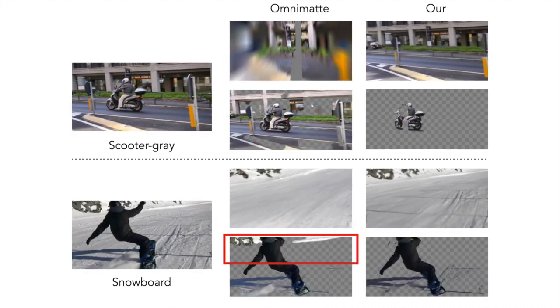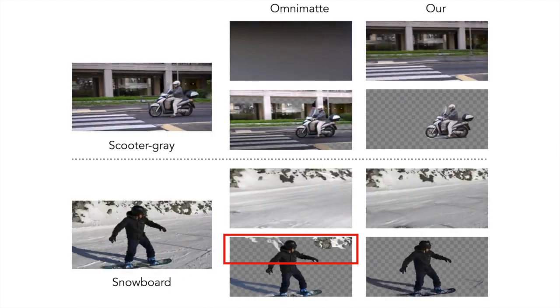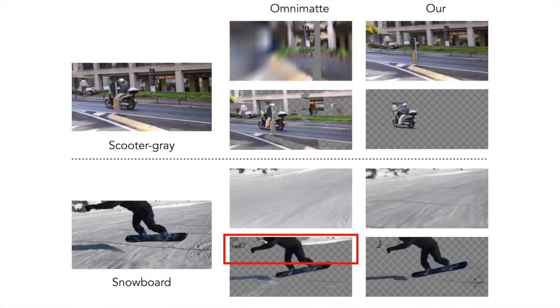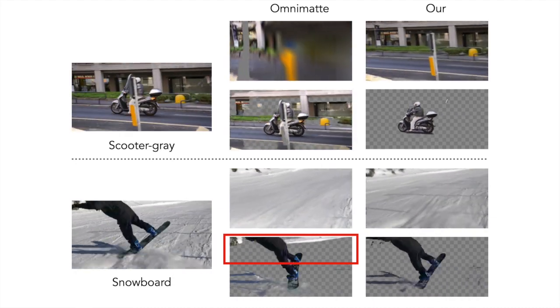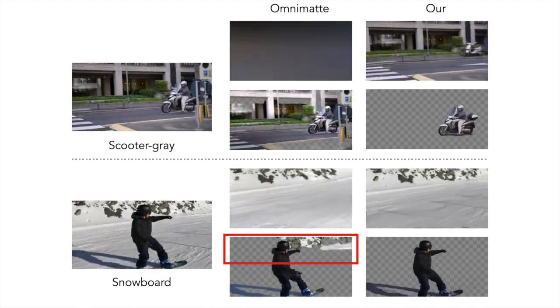On the snowboard video, the results generated by OmniMAT have background details captured in the foreground layer. Our method faithfully decomposes the foreground object and its effect from the background.